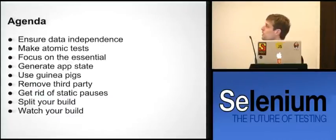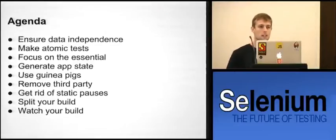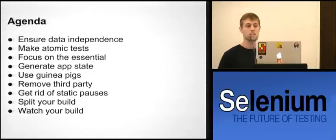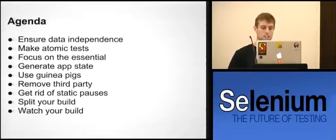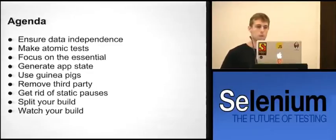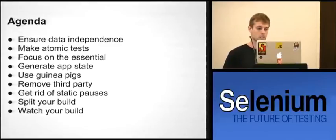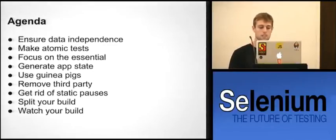Here's what we will cover: ensuring data independence, making your tests more atomic and focusing on essentials, generating application state — one of my favorite tips that not too many people follow, which is super important for a test suite optimized for running fast and getting builds sooner. Also using guinea pigs, removing third-party from applications, getting rid of static pauses, and splitting your builds.